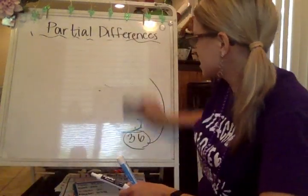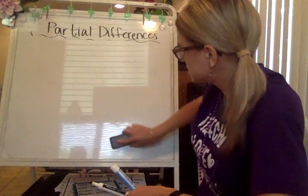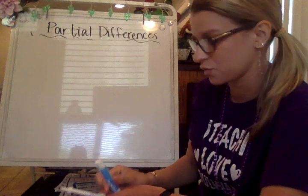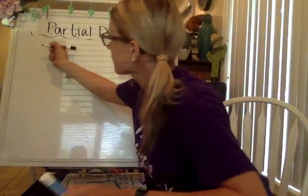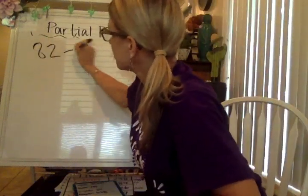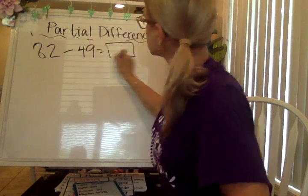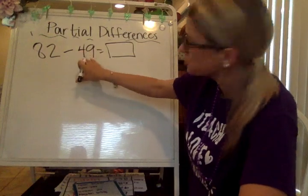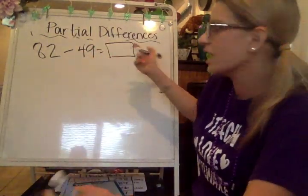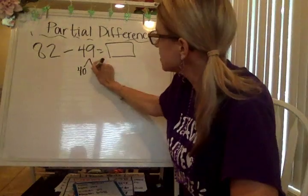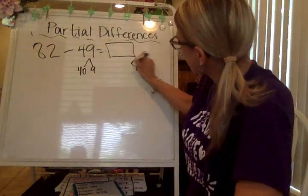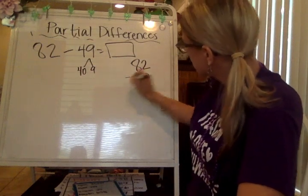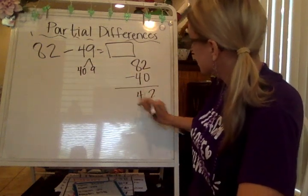Let me show you another one. Once you get the hang of it, it makes it a lot faster. It's not necessarily my favorite strategy, but it is one that you need to be familiar with. 82 minus 49 equals something. Same deal — 82 minus 49. First we want to get rid of the 40, then we'll get rid of the 9. So we're breaking this into 40 and 9. We've got our 82 and we're going to subtract 49, starting with the 40. Now we have 42.